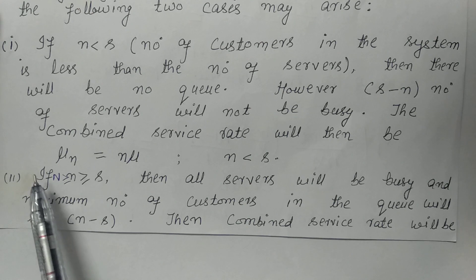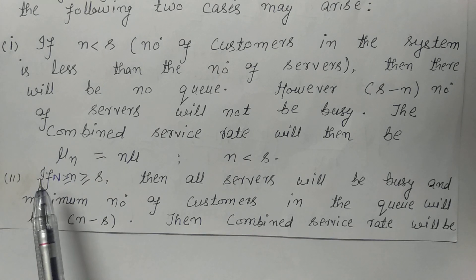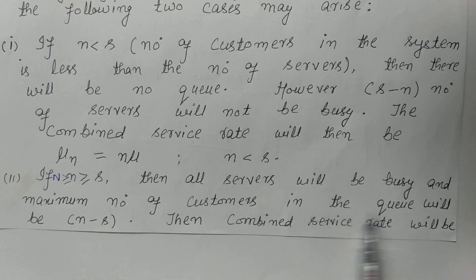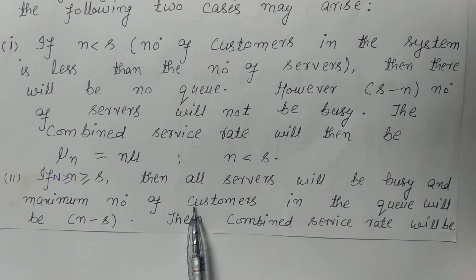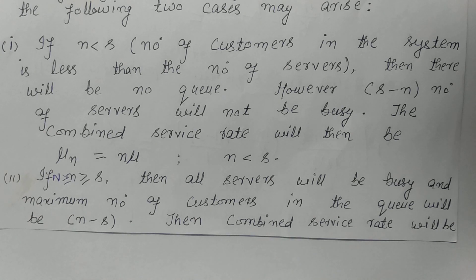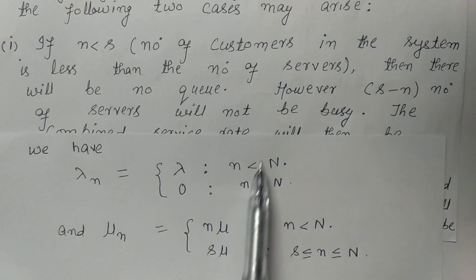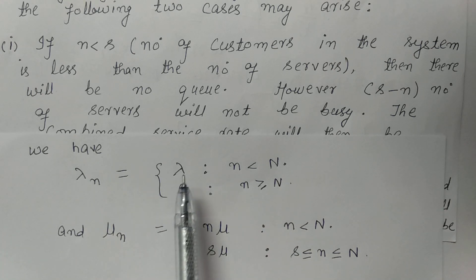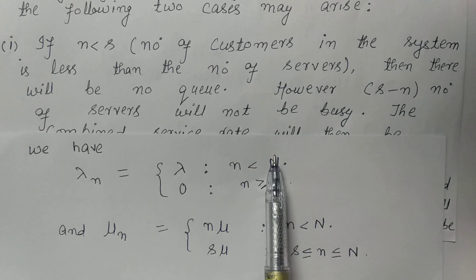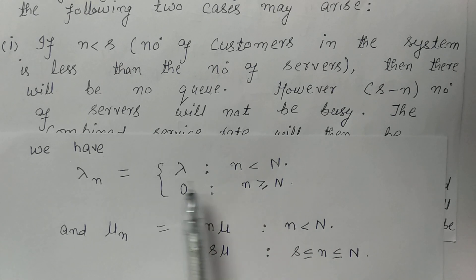The second case is if N is greater than or equal to S and less than or equal to capital N, where N is the maximum capacity of the system. Then all the servers will be busy, and the maximum number of customers in the queue will be N minus S. The combined service rate will be S·μ. The arrival rate λ_N equals λ when N is less than or equal to capital N — customers will arrive until there is space available.